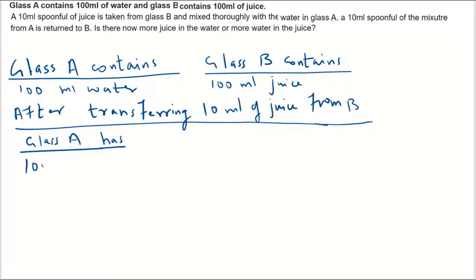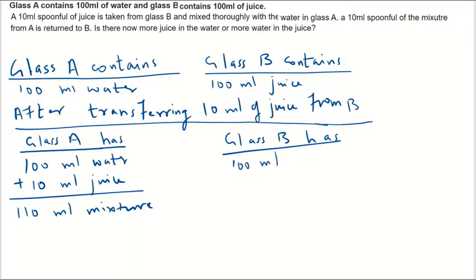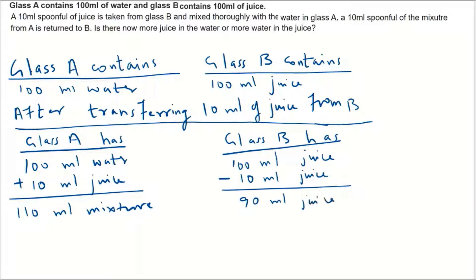In glass A we now have 100 ml of water plus 10 ml of juice transferred from B, giving us 110 ml of mixture in A. In glass B, it originally had 100 ml of juice but since 10 ml was transferred out, we are left with 100 minus 10, which gives us 90 ml of juice.